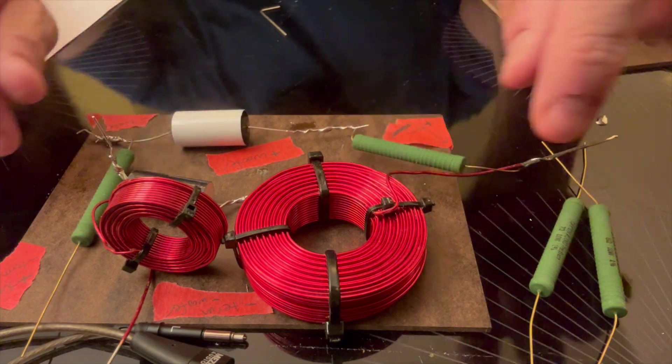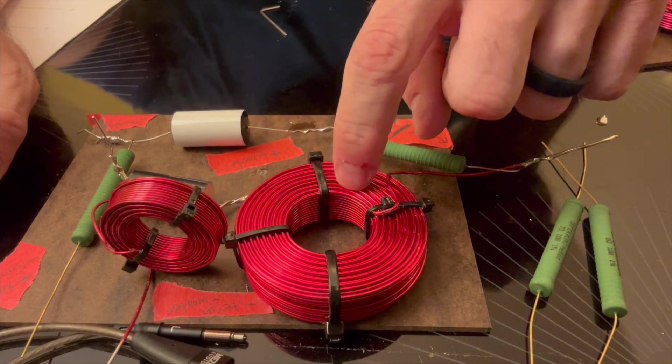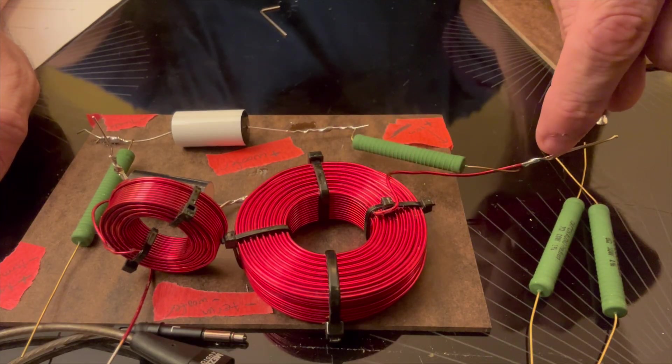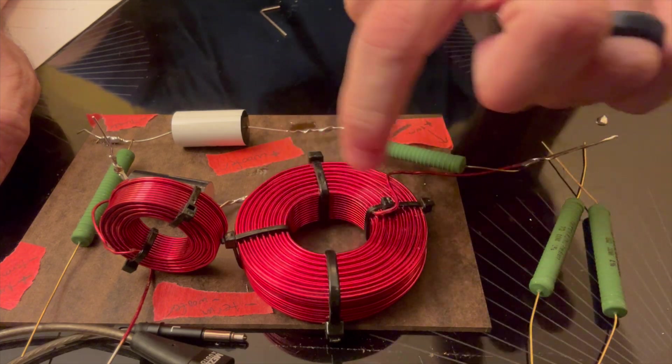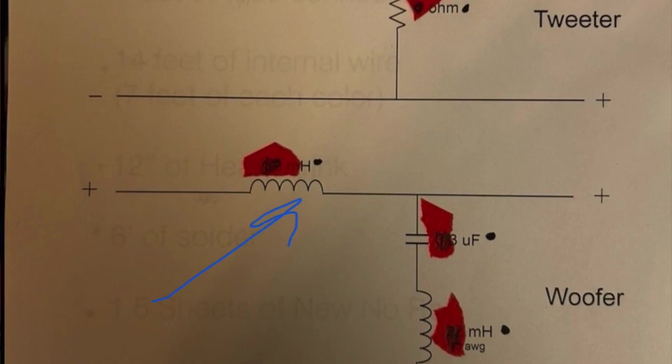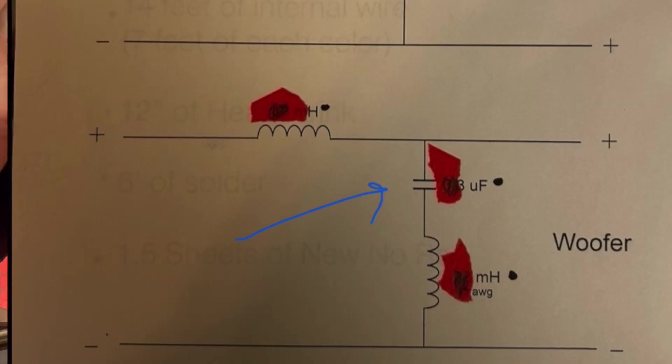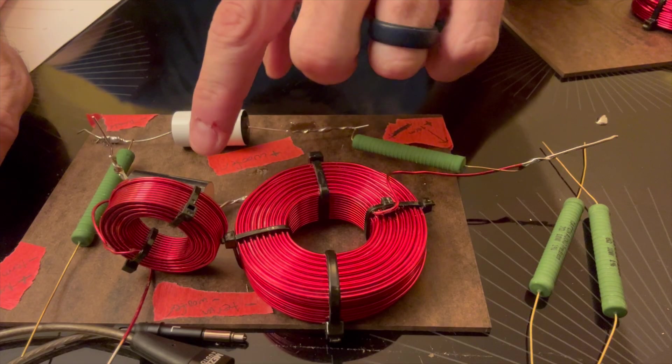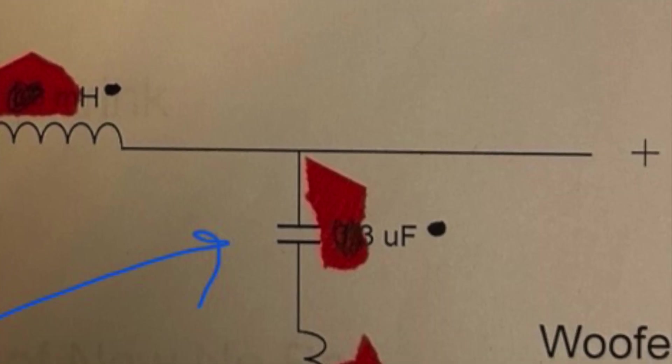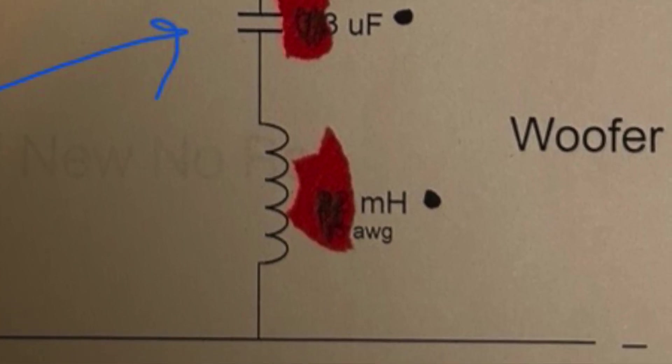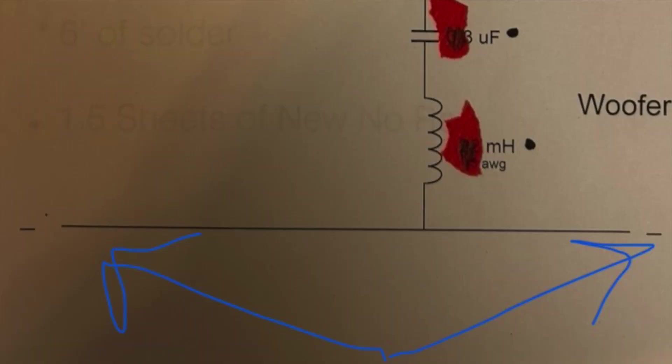If we follow the woofer, which is this big inductor here, it goes from the positive terminal to the big inductor, then to the black sonic cap. You can match the value on it. Then it goes down to the small inductor, and then that is both for the negative terminal and negative to the woofer.